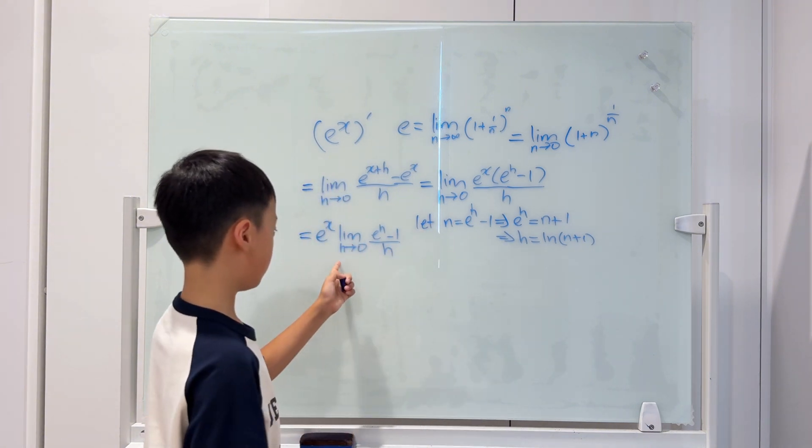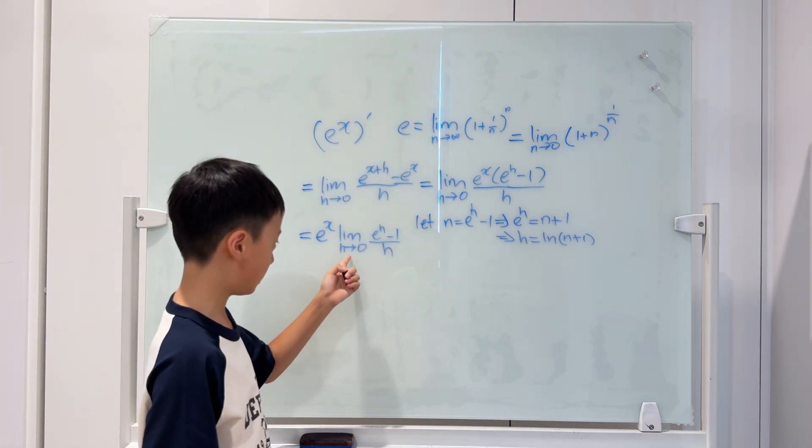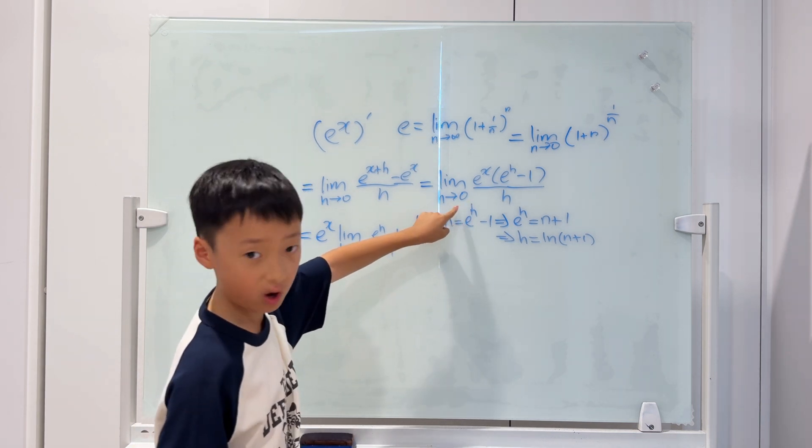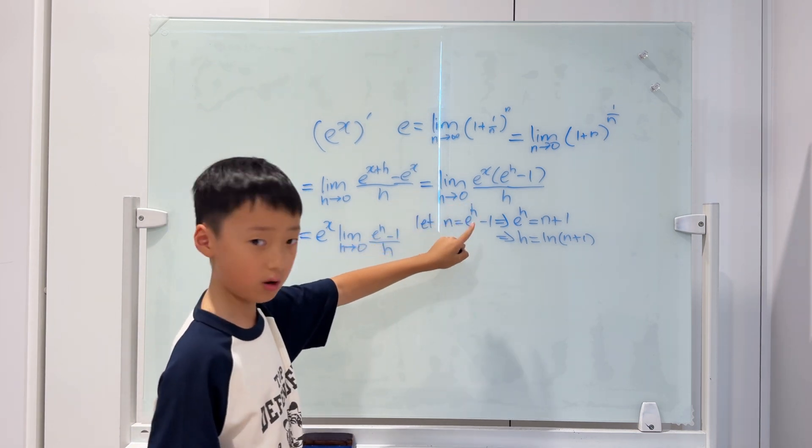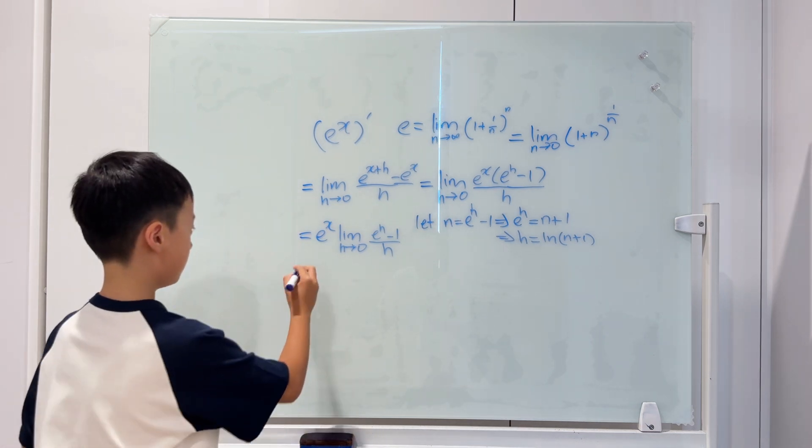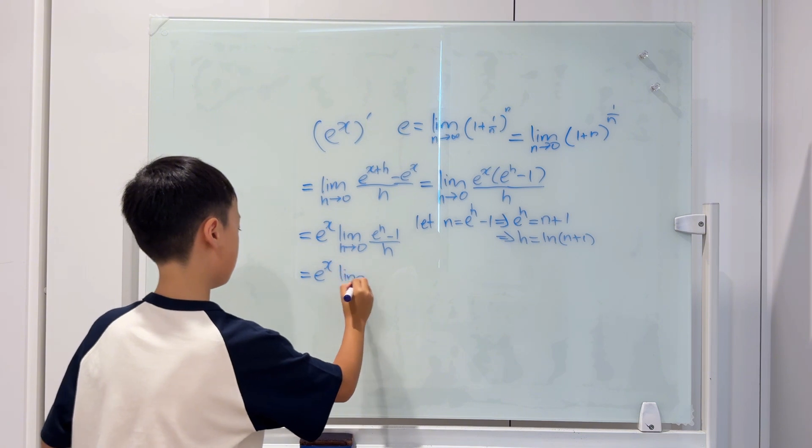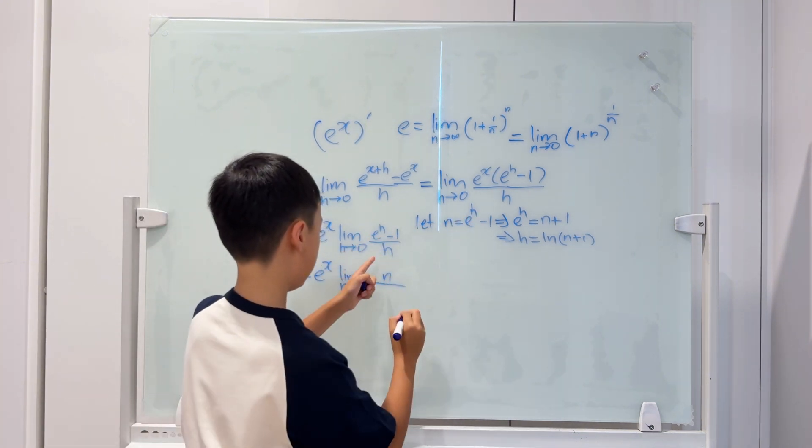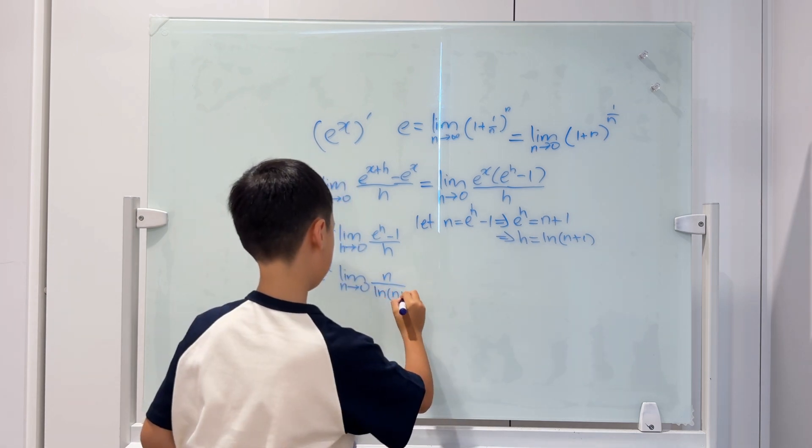Since we changed it to n, we have to also change this. When h is going to 0, this is approaching 1. 1 minus 1 is 0. So, this is approaching 0. It will be the same, but just n goes to 0. So, e equals to e to the power of h, limit of n going to 0. On the top, e to the power of h minus 1 is just n. And then, h is ln of n plus 1.